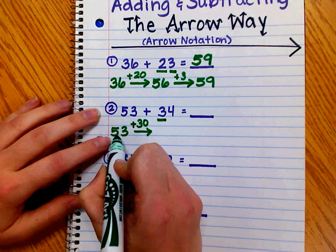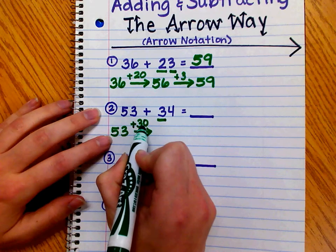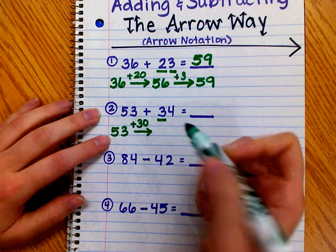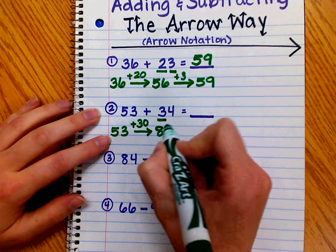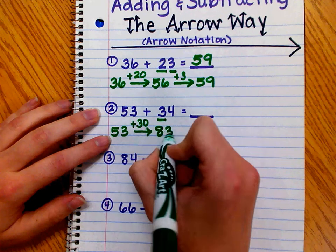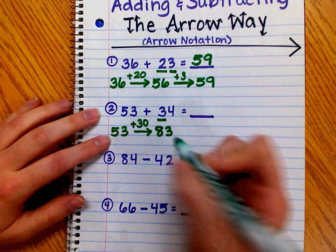53 has 5 tens, and 30 is 3 tens. 5 tens plus 3 tens is 8 tens, and we have three ones. So, 53 plus 30 equals 83.